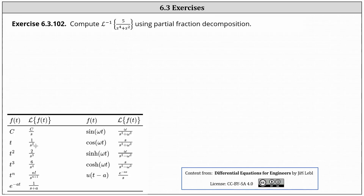Let's compute the inverse Laplace transform of five divided by the quantity s to the fourth plus s squared using partial fraction decomposition. We just found the same inverse Laplace transform using convolution in the previous video. I thought it'd be helpful to compare that method to the method of using partial fraction decomposition.